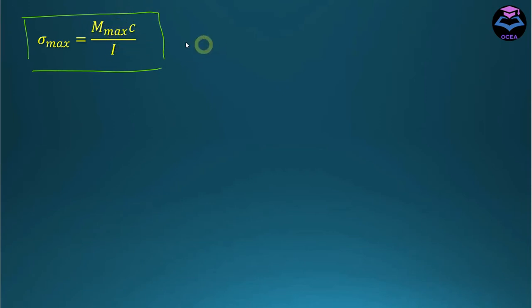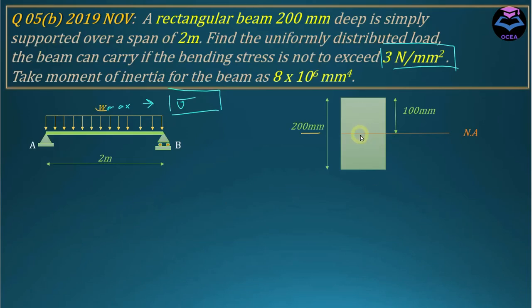Where M_x is the maximum value of moment, c is the perpendicular distance from the neutral axis to the farthest point. This distance equals 100 millimeters for both the top and bottom points of the beam.